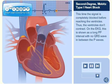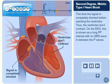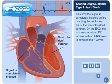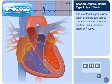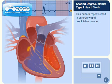This time, the signal is completely blocked before reaching the ventricles. Thus, the ventricles don't contract. On the EKG, this is shown as a long PP interval with no QRS wave in between the P waves. The electrical signal starts again and spreads across the atria, causing them to contract, producing another P wave. This pattern repeats itself in an orderly and predictable manner.